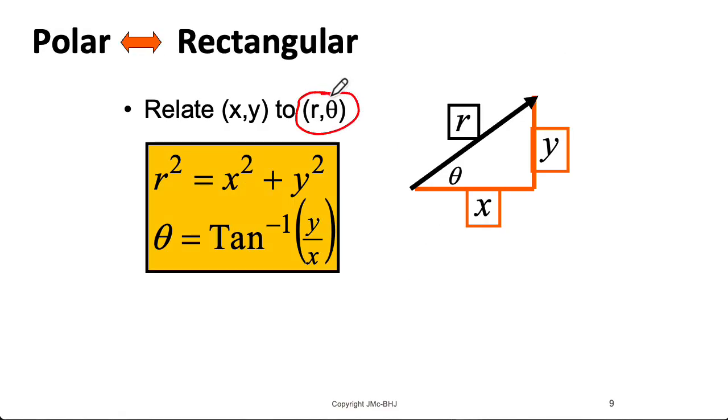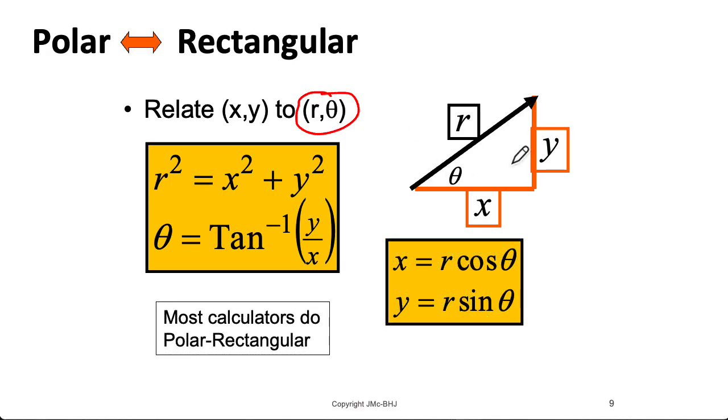So what if you have a complex number in this polar form, and you want to convert it to a rectangular form? Well, if we look at this triangle here, we see that we can just use some trigonometry. The real part is going to be r the magnitude times cosine of the angle, and the imaginary part is going to be r the magnitude times sine of the angle. Now, a lot of calculators know how to handle complex numbers and will do these conversions for you, including handling all that weirdness with arc tangent, but it's important that you understand the underlying concepts.